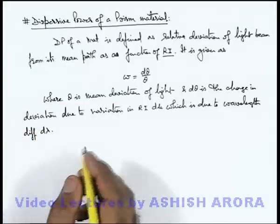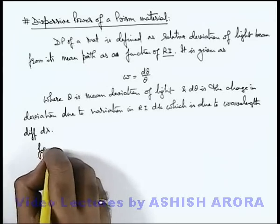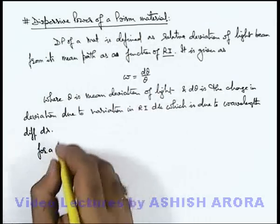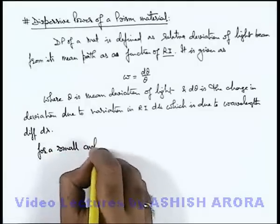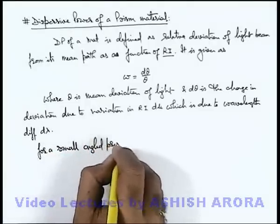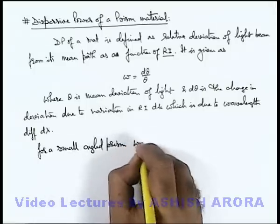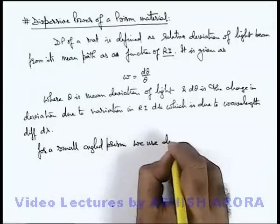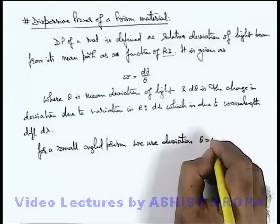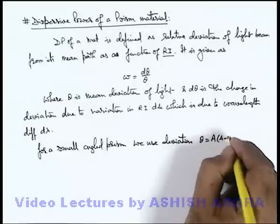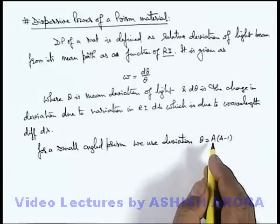For a small angle prism, we use deviation of light for near normal incidence. We write it as A multiplied by μ minus 1, where A is the prism angle.